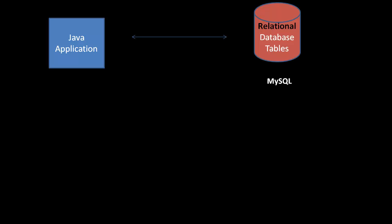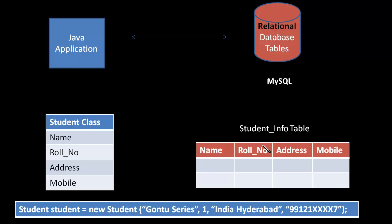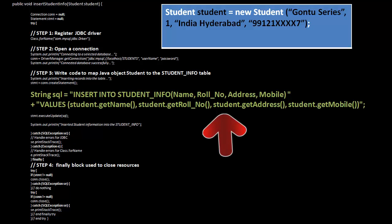Let's say you have a Java application which connects to a relational database, for example MySQL. You have a Student class which contains member variables: name, role number, address, mobile — representing student information — and you have created a student object out of this class. The task is to store or persist that student information into the student info table. If you are not using any ORM framework like Hibernate, you would do this using JDBC, and typically your code would manually map member variables to the columns of the table using an SQL query. And here lies the major problem.